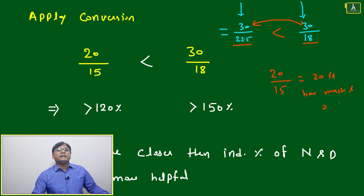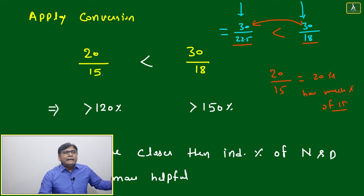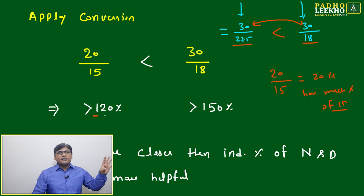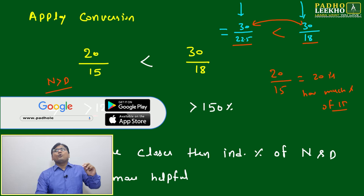How much percentage of 15 is 20? One thing is sure: 20 is more than 15. When the numerator is greater than the denominator, it will be more than 100%, that is 100% sure. If numerator is more than denominator, then 100% sure it will be more than 100%.